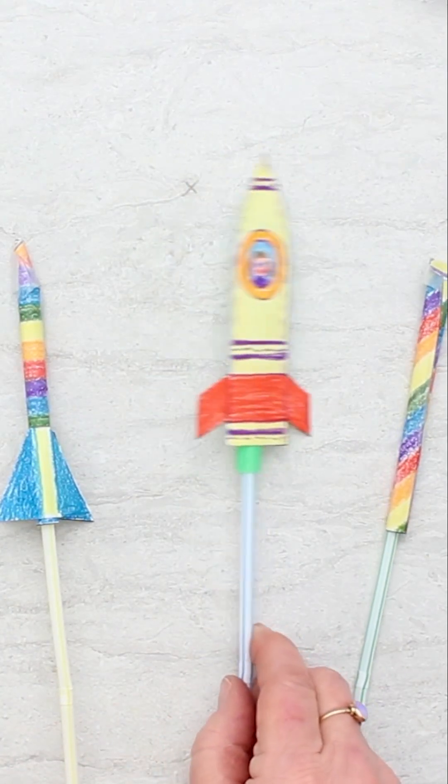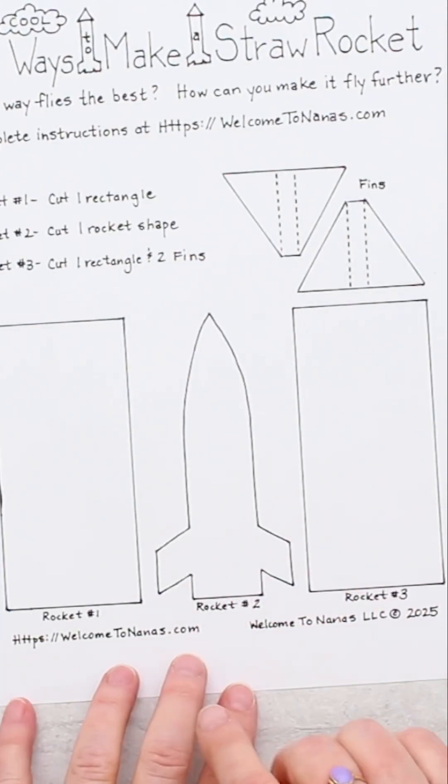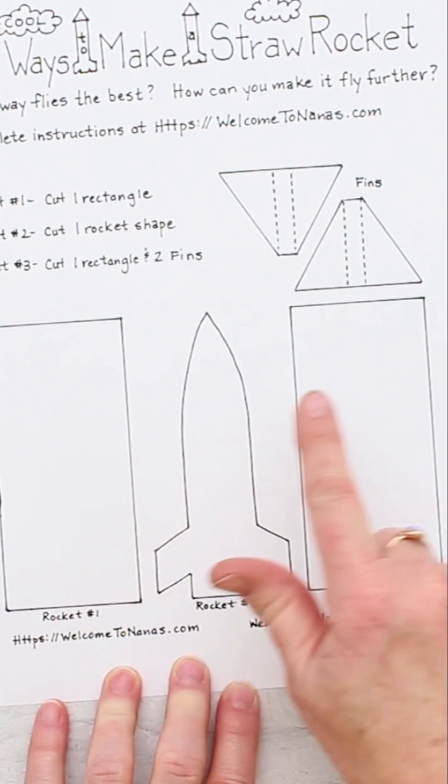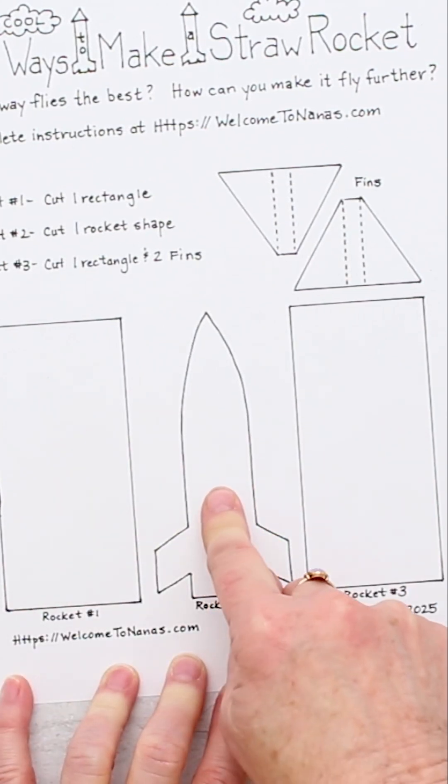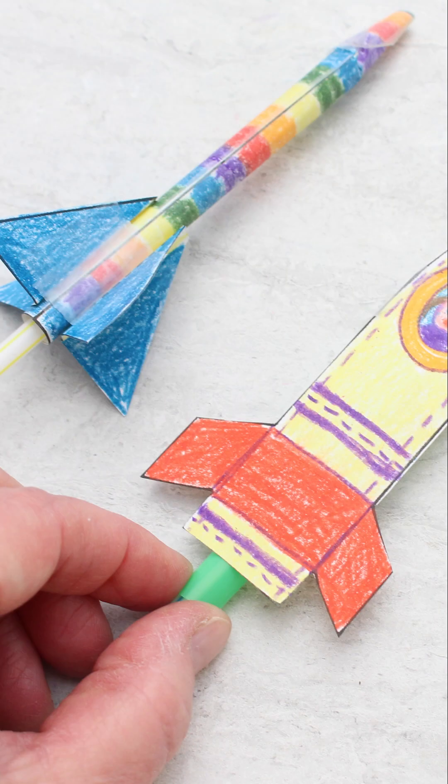We've got three ways to make straw rockets. I've made a free pattern for you with three different kinds of rockets: a very simple rocket, a rocket that actually has the shape of a rocket, and then a third rocket with fins that we'll put on.